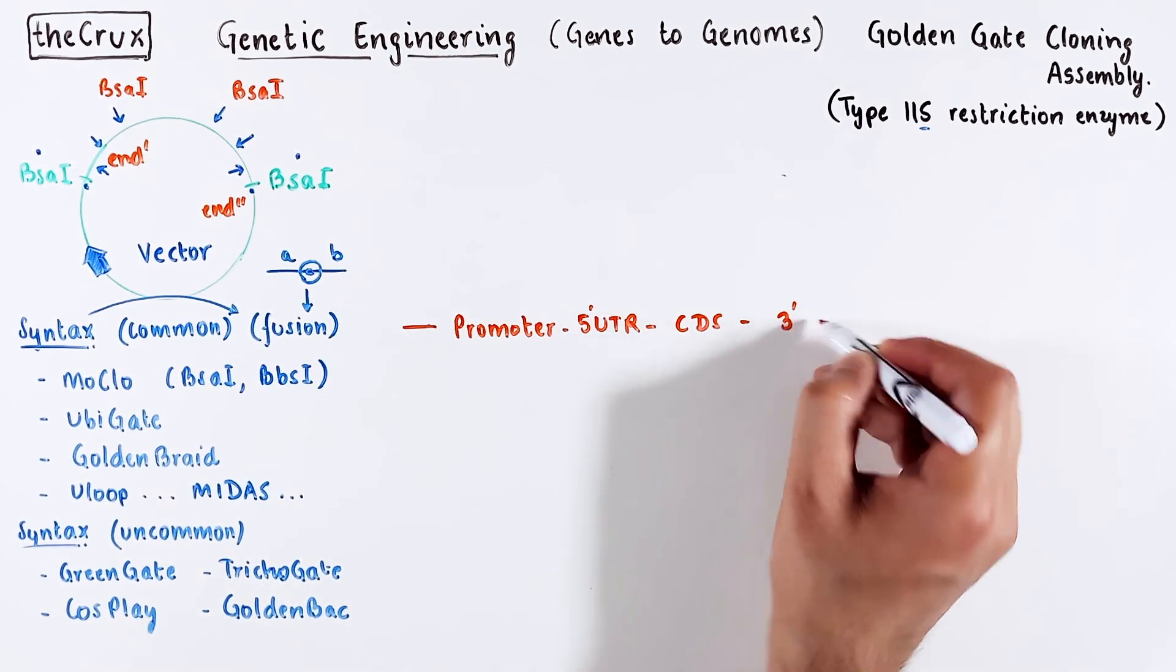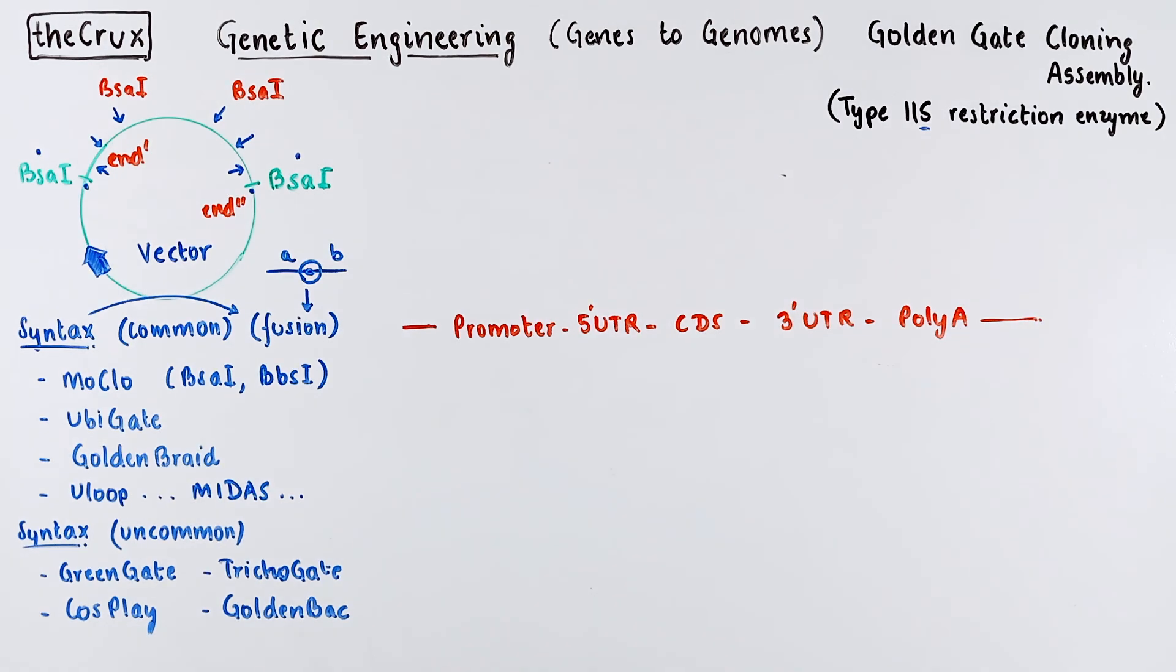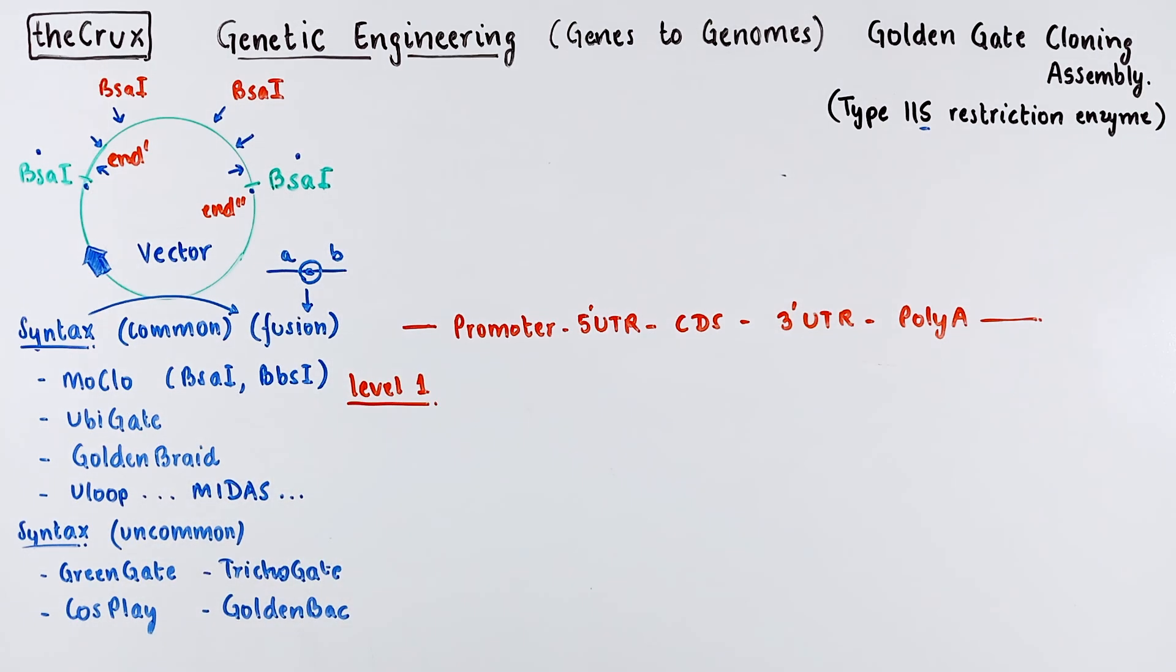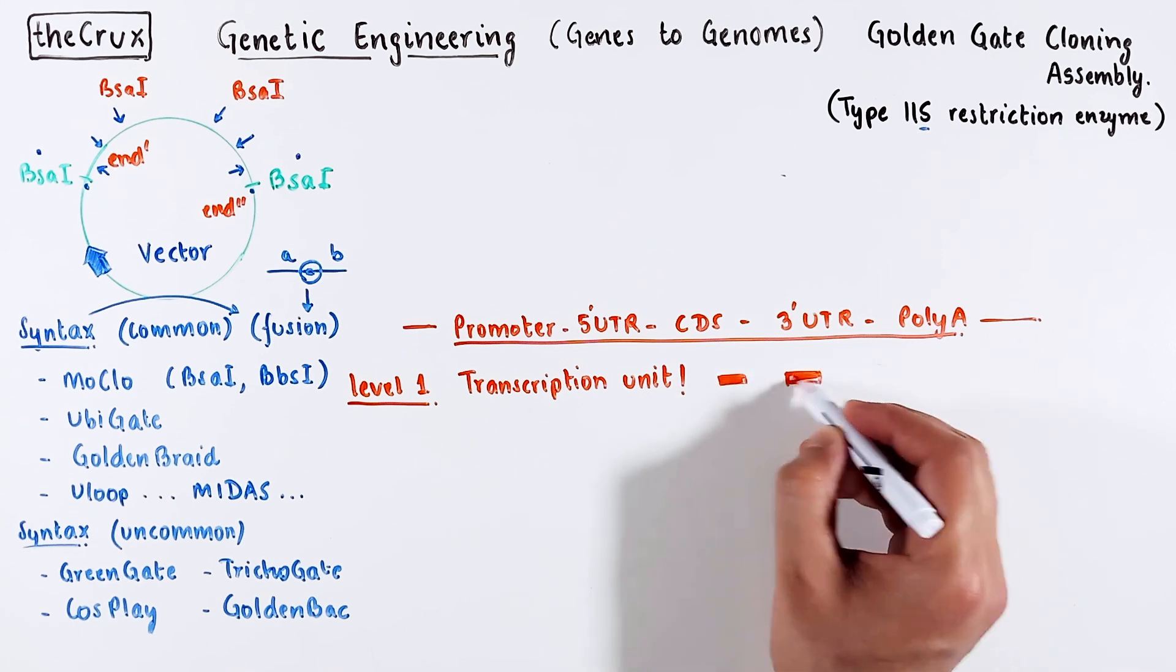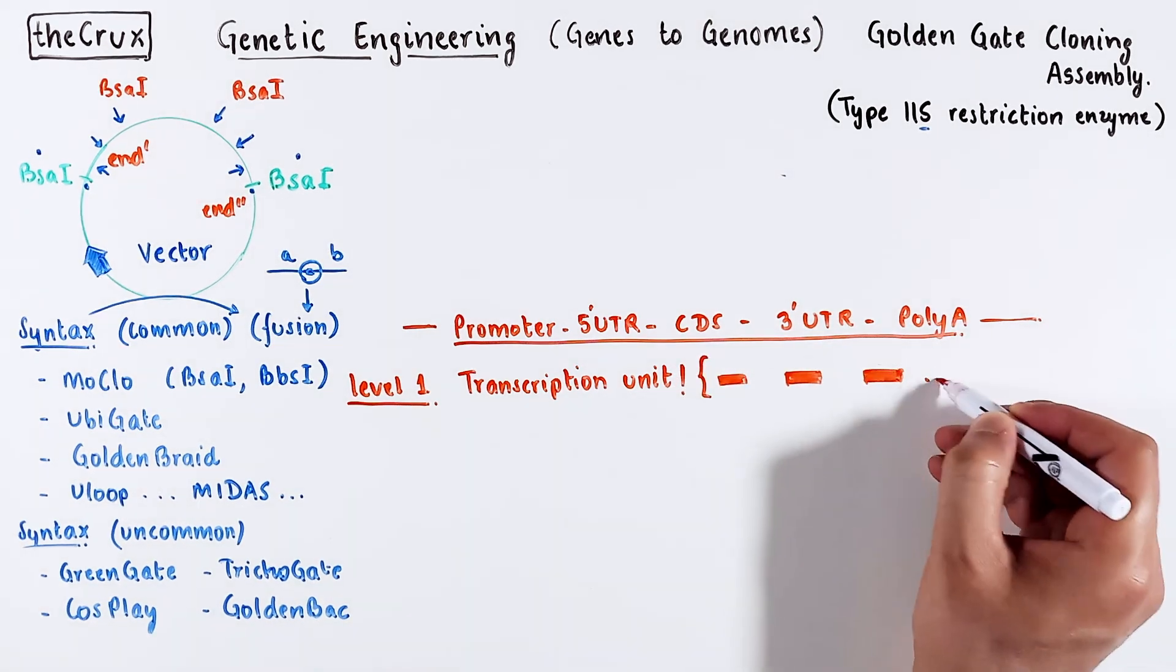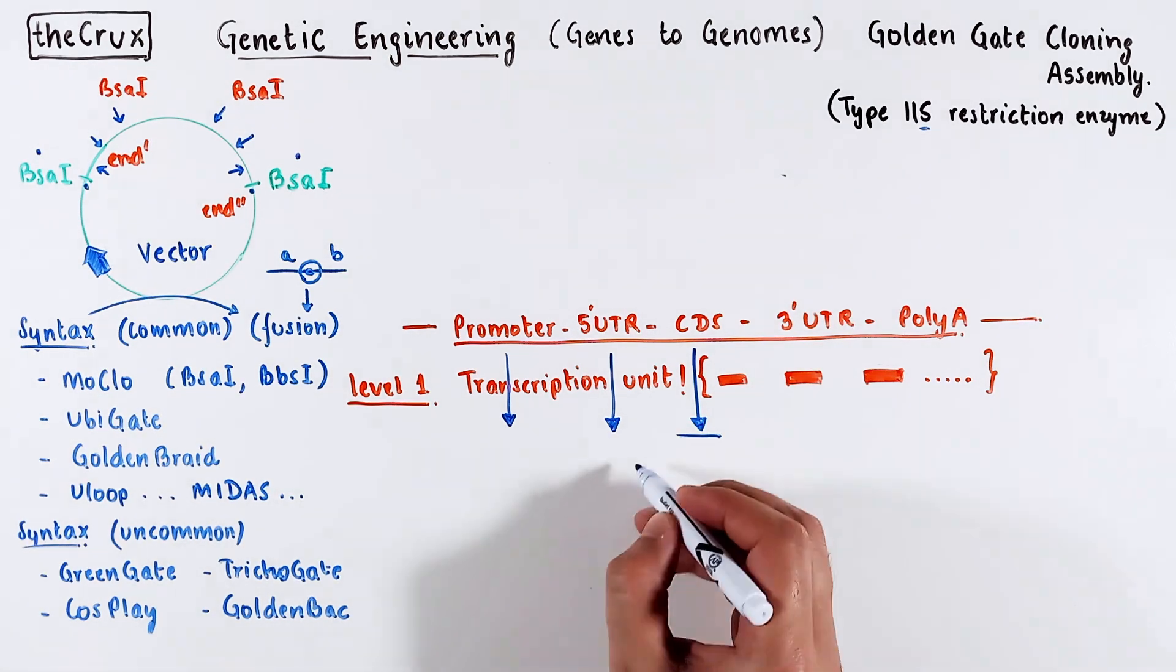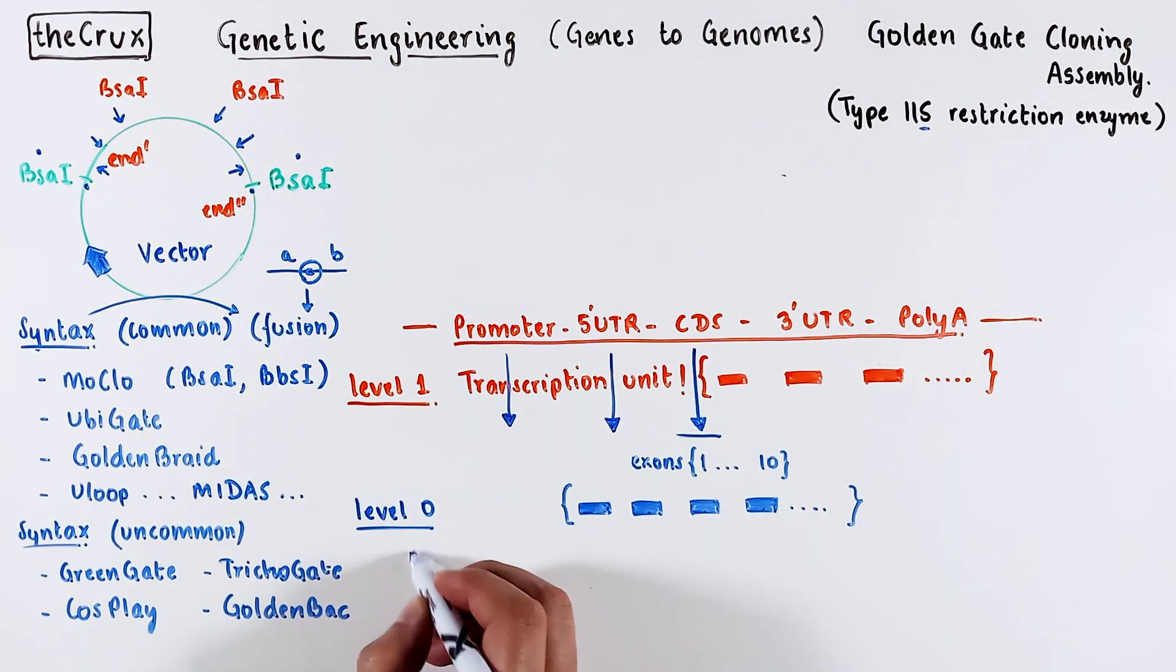I will take the example of MoClo Golden Gate. Pretend that you are trying to clone a series of fragments like these into a vector. This type of structure is a Level 1 MoClo module, which as you can tell is a transcription unit which has different parts. Each of these parts may have multiple subparts. For instance, a CDS may be composed of 10 different exons. That substructure is a Level 0 MoClo module.